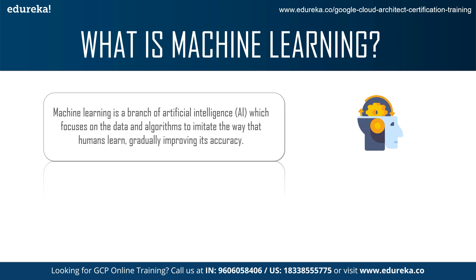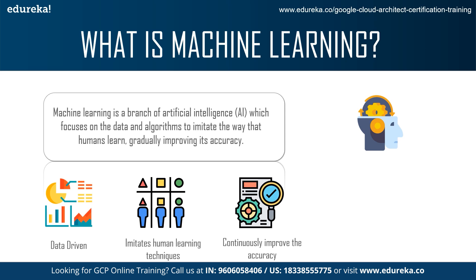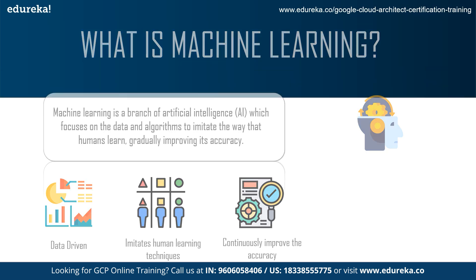Machine learning is always data driven and the main aim is to imitate human learning techniques as best as possible. There is the opportunity for continuous improvement in accuracy, and it is always possible to create a model that gradually improves. So this is what machine learning is.